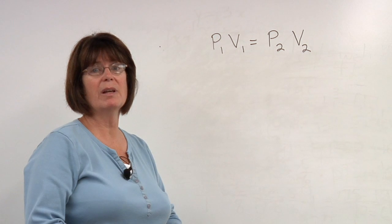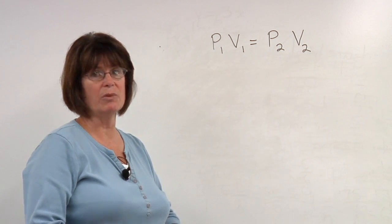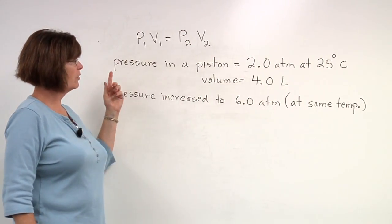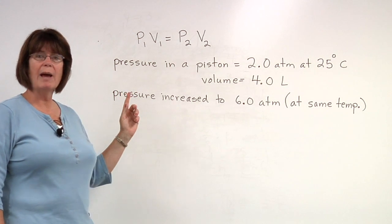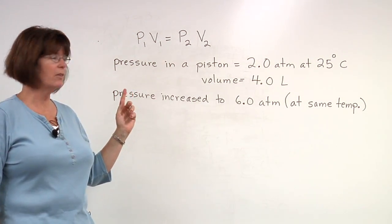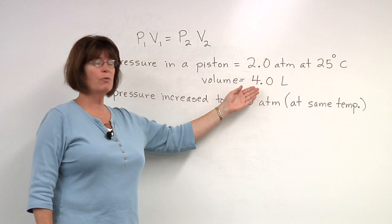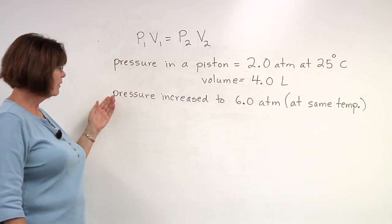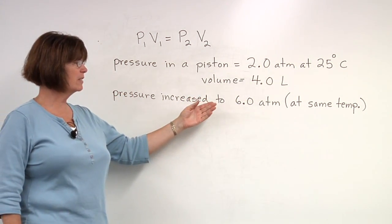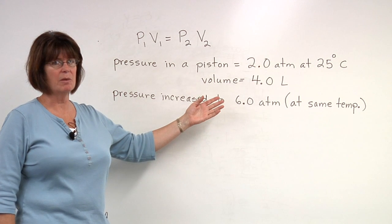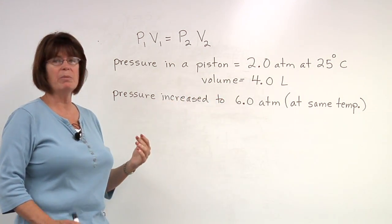Here is an example with some specific numbers. If the pressure in a piston is two atmospheres at 25 degrees Celsius and the volume is four liters, if the pressure is increased to six atmospheres at the same temperature, what will then be the new volume?